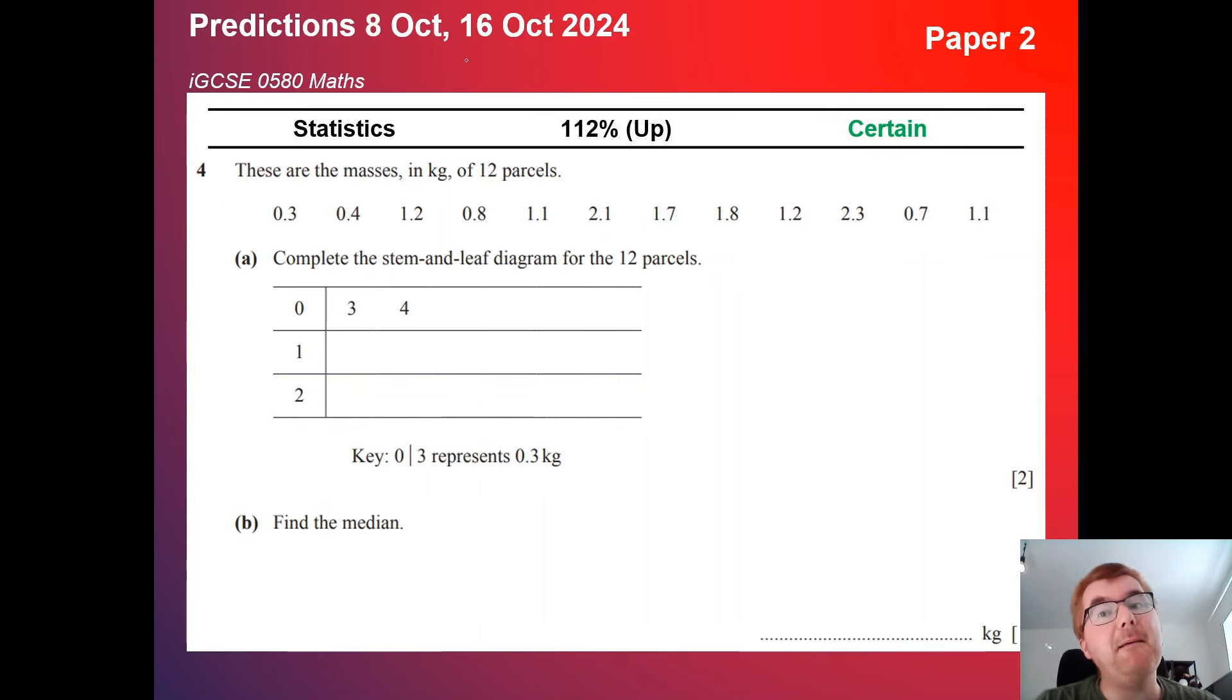On to statistics. Appears a lot on paper 2 and paper 4. We're talking about paper 2 here. 112%, in that certain category, it can integrate itself into the papers quite a lot. Here is a very typical stem and leaf diagram and then some kind of averages. That's quite common. They could also ask you to work with pie charts, something like that, particularly on paper 2. Cumulative frequency and box plots and histograms can appear across paper 2 and paper 4, usually more on the paper 4, however.